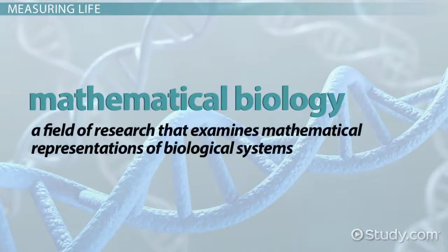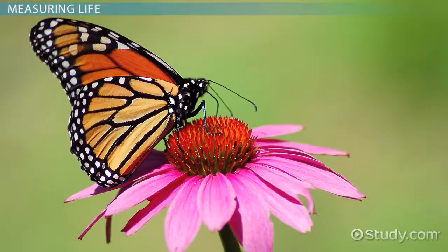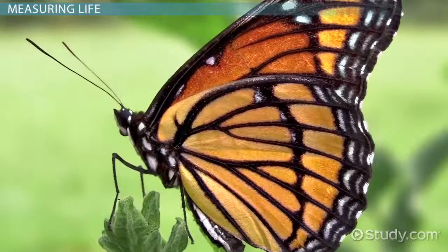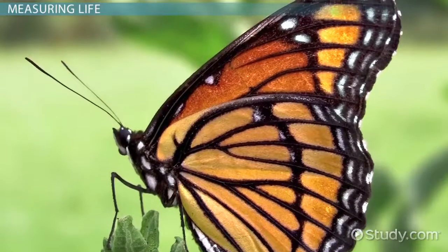Mathematical biology is a field of research that examines mathematical representations of biological systems. Imagine that you are a biologist studying butterfly migrations. You go into the field and count a sample population in a confined region and then multiply your sample numbers by the total geographical range to get a population estimate.